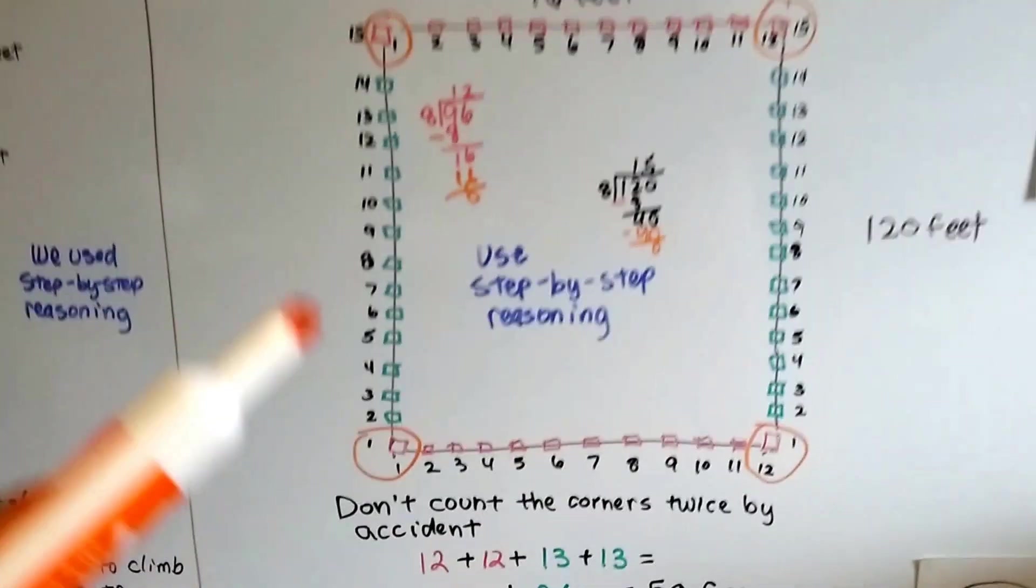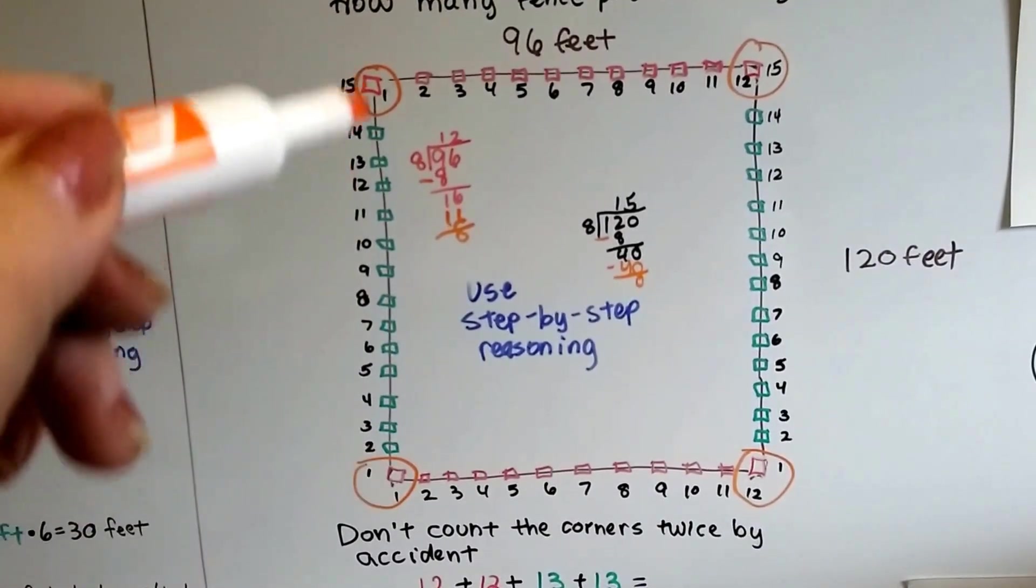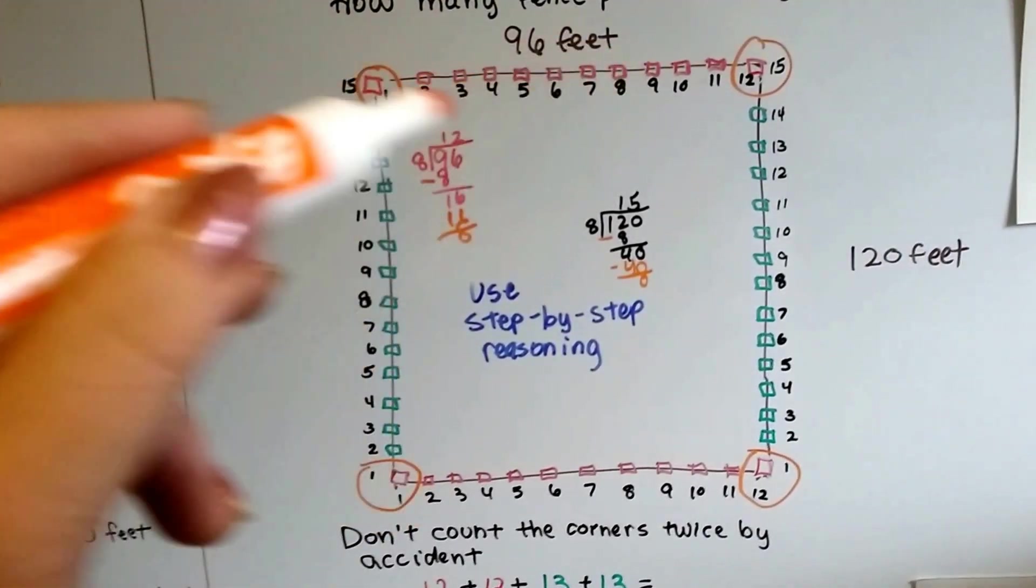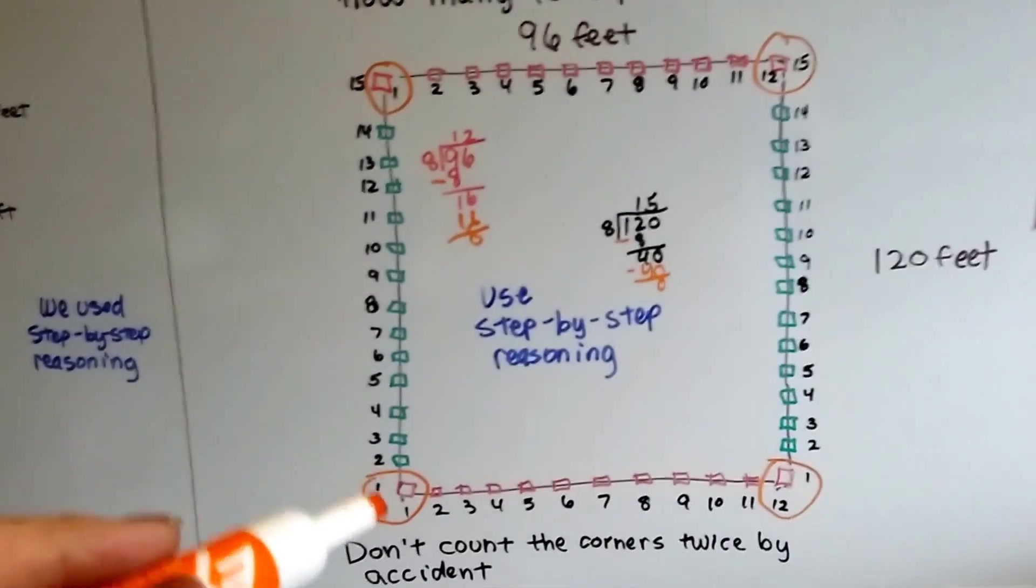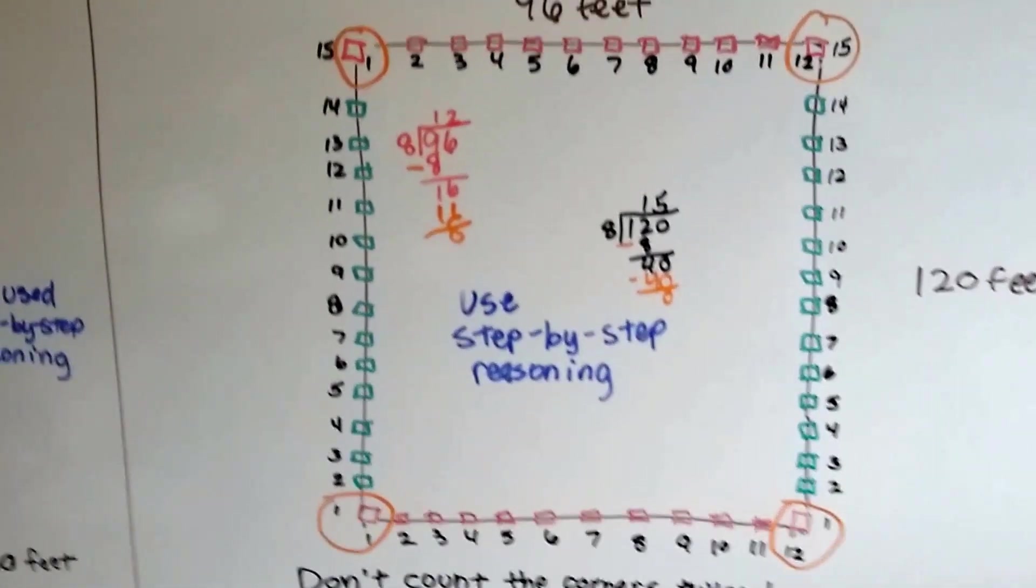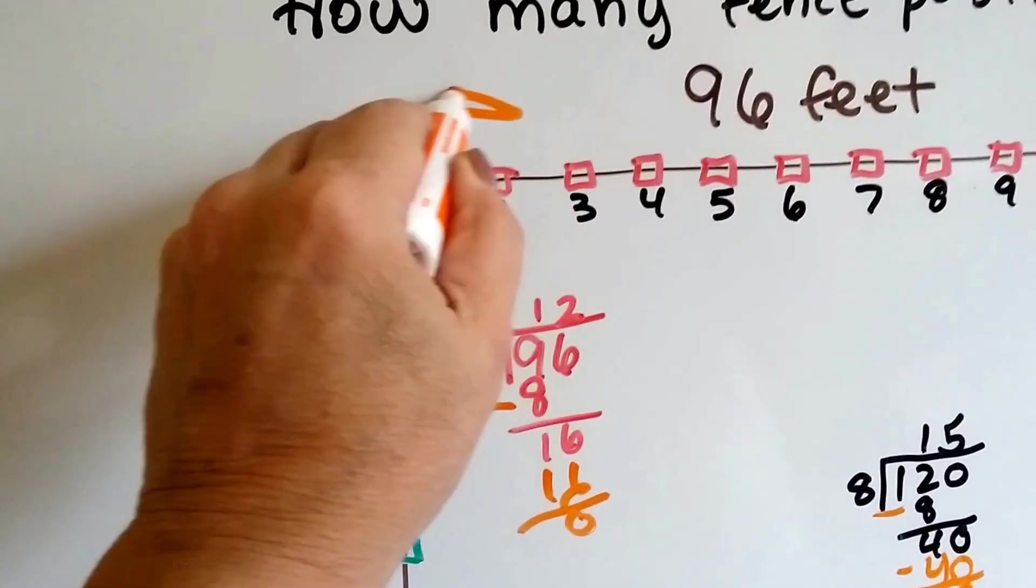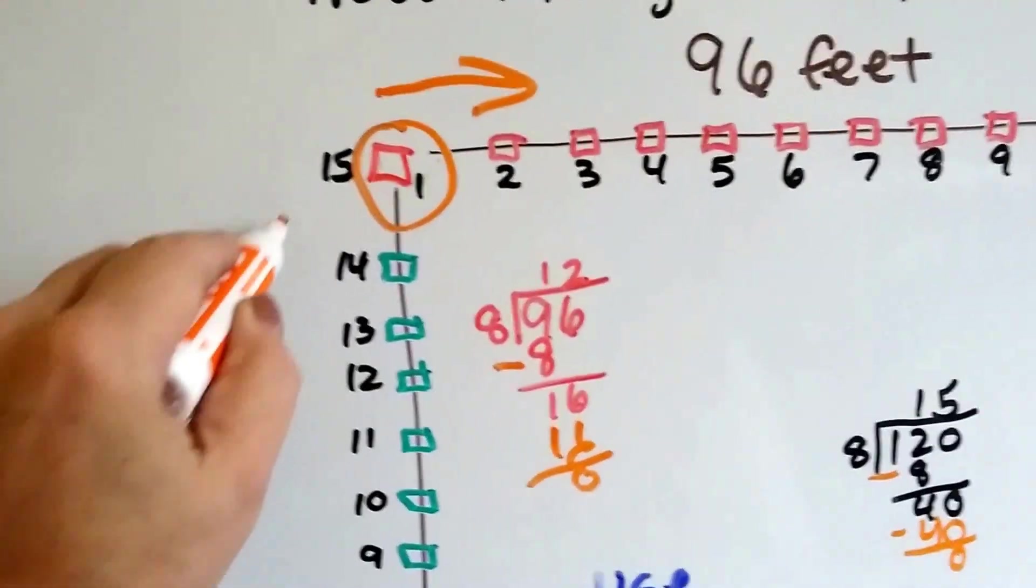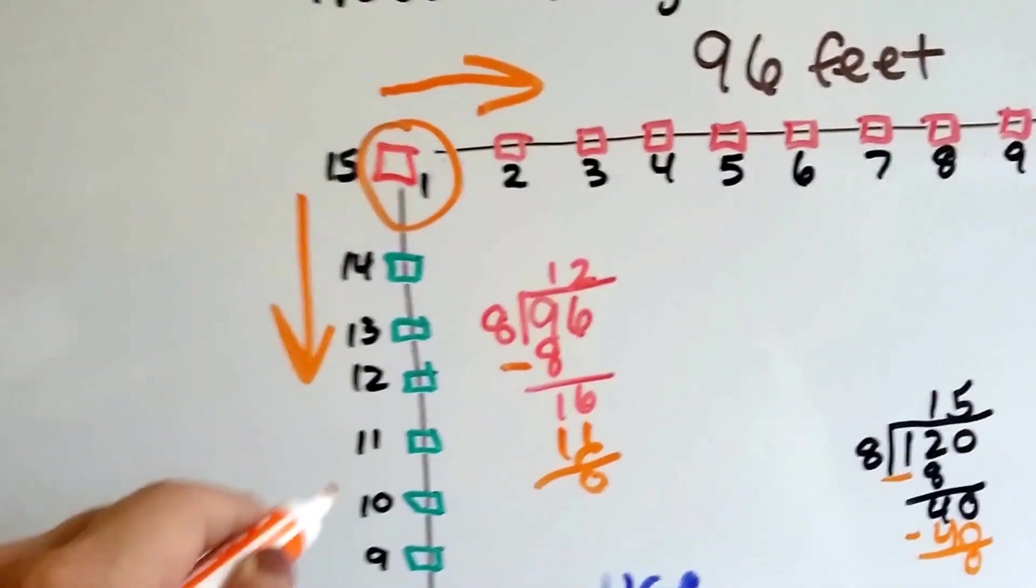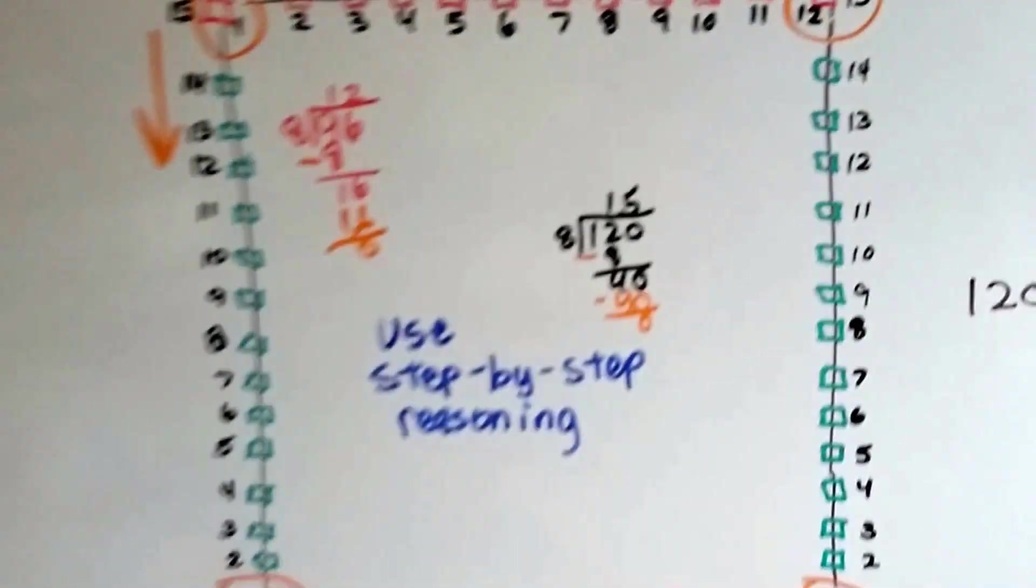Now, there's a very good chance if I didn't draw this, I would have forgotten that the corners are taken for this side and this side. That we use it twice. You don't count the corners twice by accident. This one, right here, can be counted towards this row of fence posts and it can be counted towards this row of fence posts because it could be on this side or this side. And same with each corner.